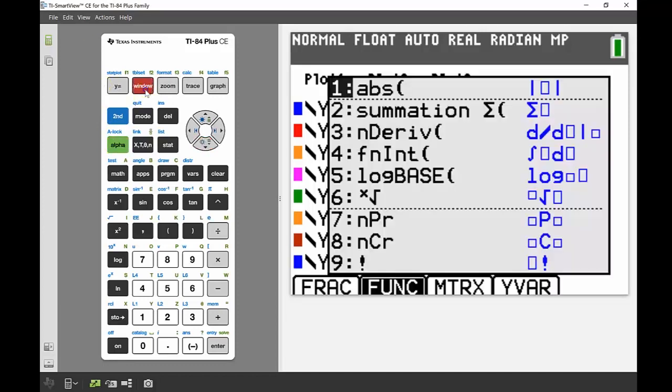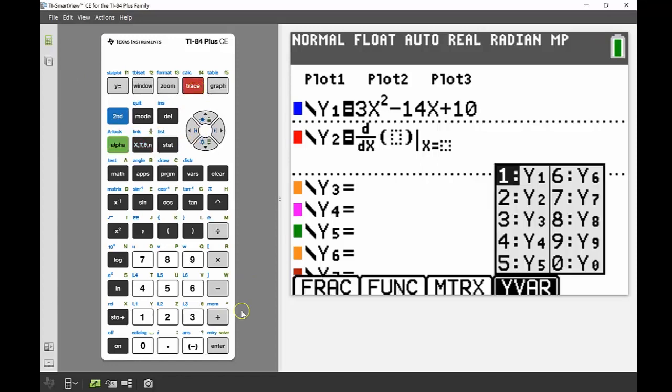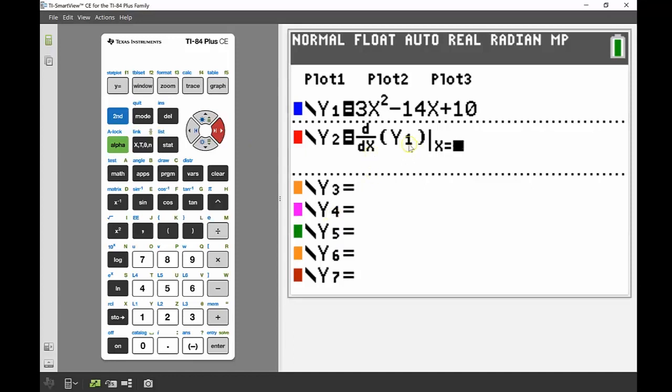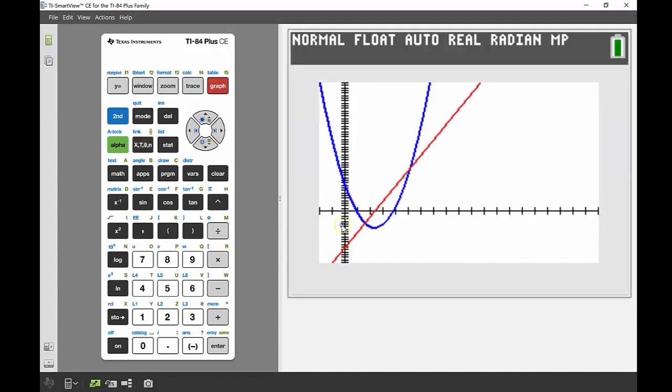So alpha f2 and then number three to bring up that derivative template. Again my variable is x. I'm sketching the graph of my initial function. So again I'm going to use quick keys to bring in my y1 variable there. So I'm sketching the derivative with respect to x of my y1. In this case I'm not finding x at a particular point. I want to find the derivative at all of those points. So I'm going to let my x equal to x there. So now when I sketch my graph, lovely I can see that's my derivative function there.